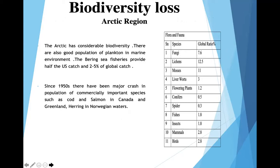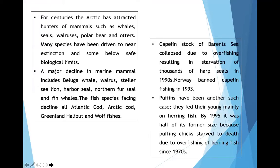The Arctic has considerable biodiversity, with a good population of plankton in the marine environment. Since the 1950s, there have been major crashes in the population of commercially important species such as cod and salmon in Canada and Greenland and herring in Norwegian waters. For centuries, the Arctic has attracted hunters for mammals such as whales, seals, walrus, polar bears and otters. A major decline in marine mammals including beluga whale, walrus, harbor seal and fin whales has been observed.